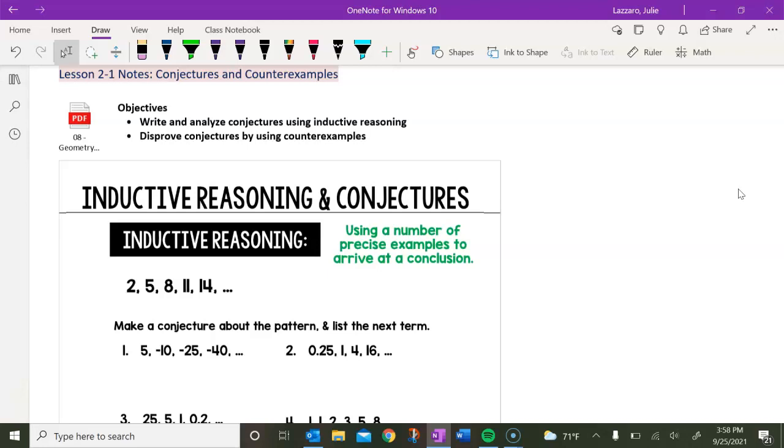You haven't come up with or thought through every single possible scenario that could apply to this and have confirmed that they're all true. So you think that a conjecture is true, but you haven't done all of the work to completely prove it yet. That's what a conjecture is. So today we are going to begin by focusing on using some inductive reasoning, which is using a number of precise examples to arrive at a conclusion. So you can fill in that definition on your note sheet.